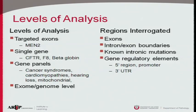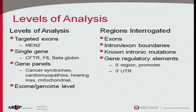Traditionally, the regions we interrogate are the exons, intron-exon boundaries, known intronic mutations, and if known, gene regulatory regions. We do not pursue deep intronic mutations unless something more is known, because we don't want to come up with large numbers of variants of uncertain significance that we know we can't handle.